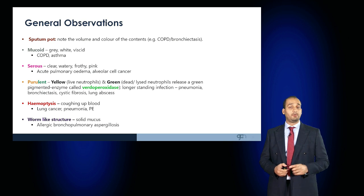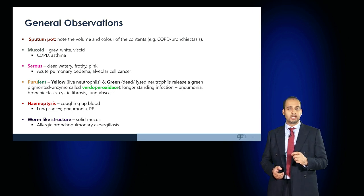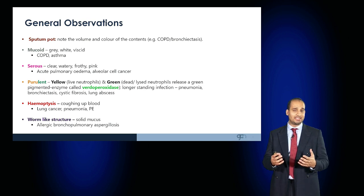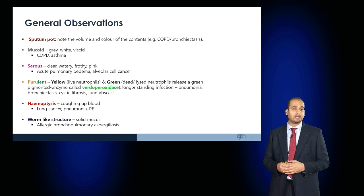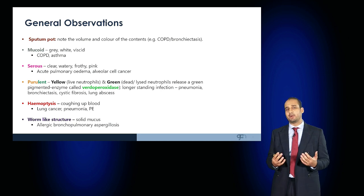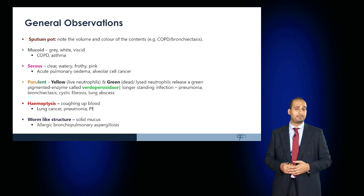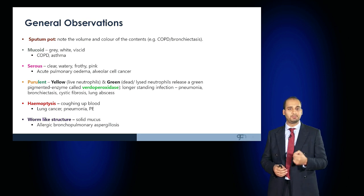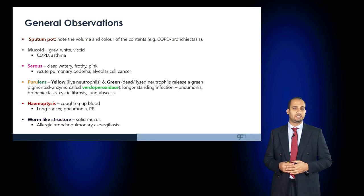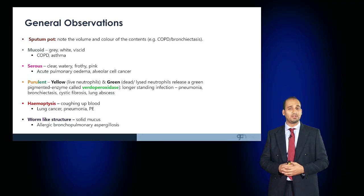Observe for whether there's a sputum pot by the bedside and if so examine the contents. The colour of the sputum can provide an indication of the underlying pathology. Mucoid grey-white viscous sputum is associated with COPD and asthma patients. A serous clear watery pink frothy sputum can be noted in patients with acute pulmonary oedema, or if in abundance can be associated with alveolar cell cancer.